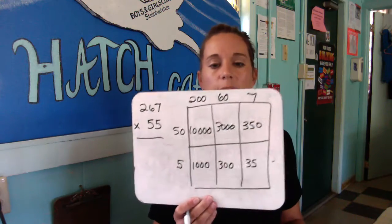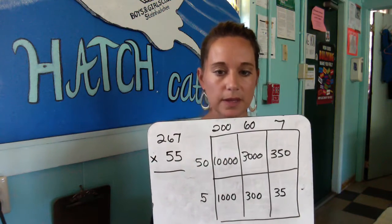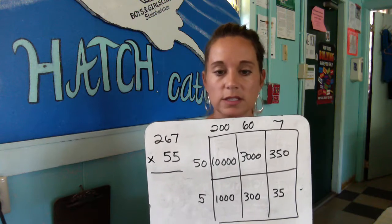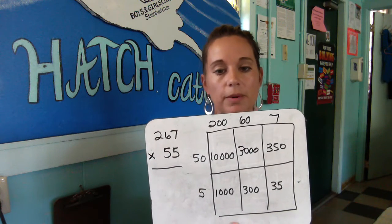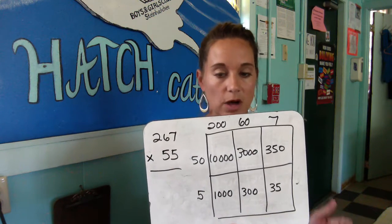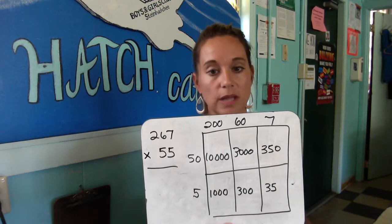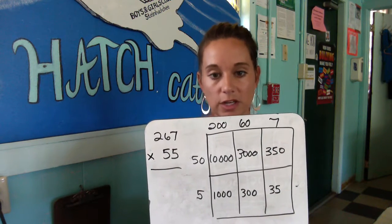Continuing on: 200 times 5 is 1,000. We do 60 times 5 — 6 times 5 is 30, and then add one zero, giving you 300. And then 7 times 5 is 35. That's what your bottom boxes would look like. You would instruct the student to put the numbers in order from largest to smallest and add them, paying special attention to lining up those place values.